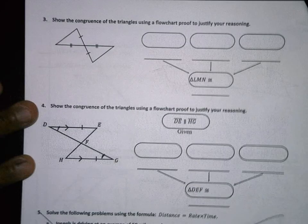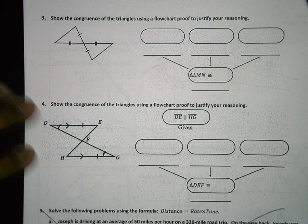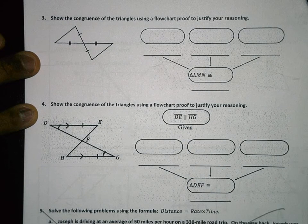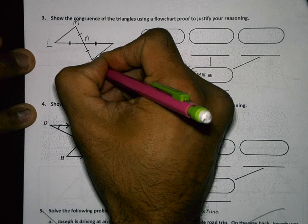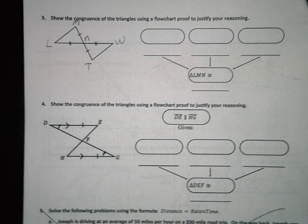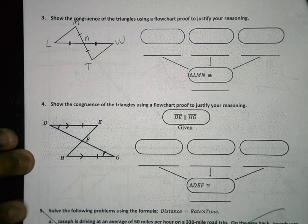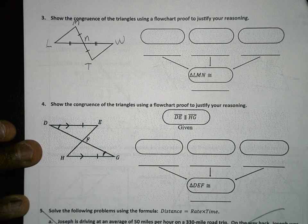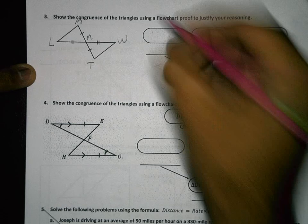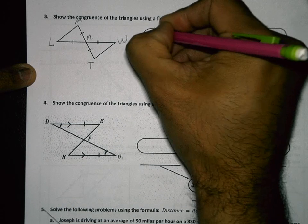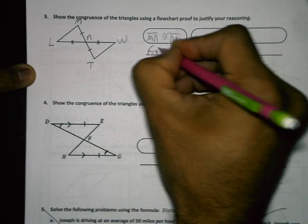Now let's look at these flow proofs. The diagram wasn't labeled correctly, so we'll label the points L, M, N, T, and W. We want to prove these two triangles are congruent. We label the given information: side MN is congruent to NT — that was given to us.